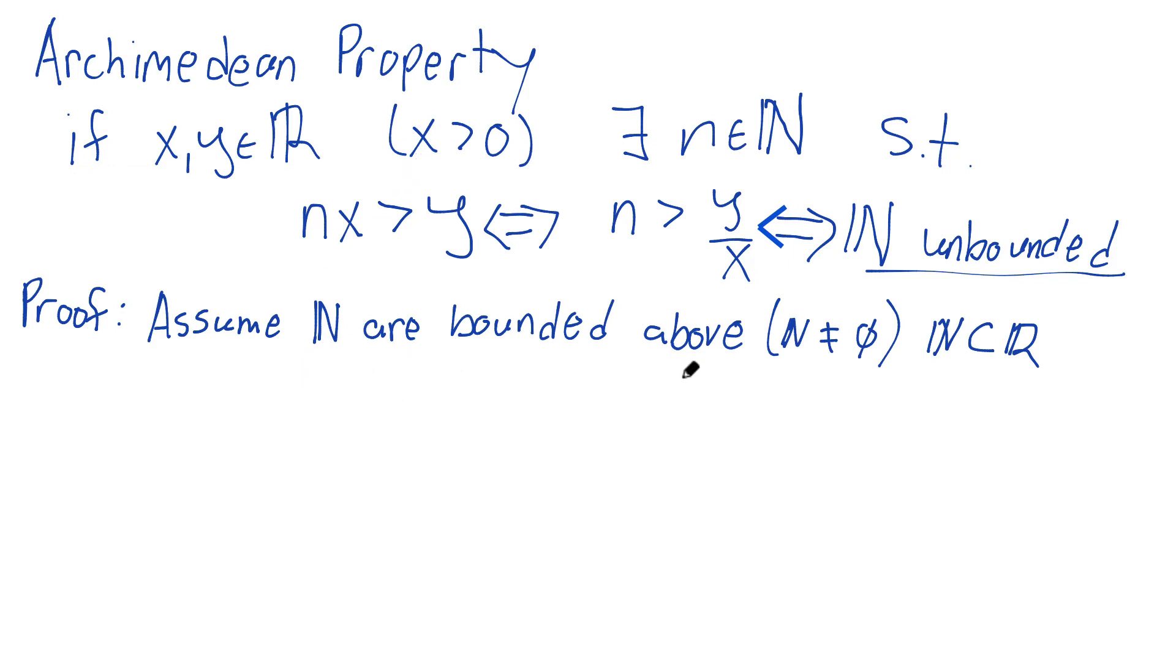Right? So here I'm assuming all of that. I know N is non-empty, I know N is a subset, and I'm assuming it's bounded above. That means that a supremum of the natural numbers exists. Let's just call it B. B for bound.